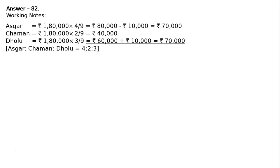Interest on capital amounted to Rs. 1,20,000 and salary amounted to Rs. 1,24,000. Hence, after deduction of these two — Rs. 1,20,000 for salary and Rs. 1,20,000 for interest on capital — we will be getting Rs. 1,80,000 as net profit.